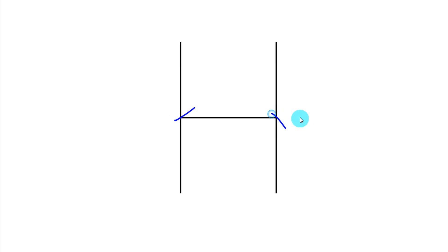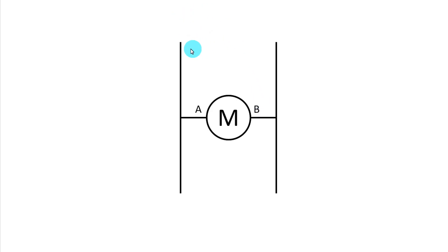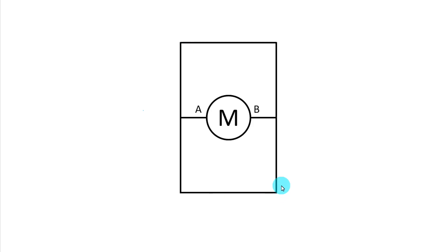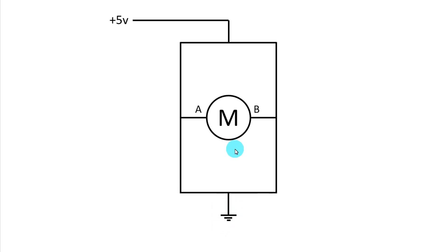This is the H-bridge structure. Here we will connect a motor — one pin of the motor will be connected here and the other pin here. This is pin A and pin B. Now what we will do is connect both sides. Here we will connect the positive and here the ground. As I have connected a 5V motor, I have provided plus 5 volts.